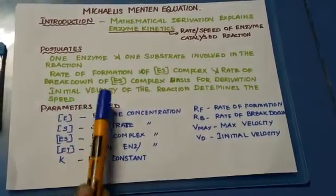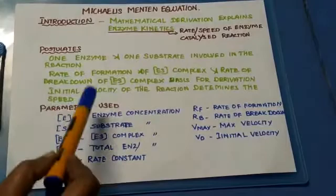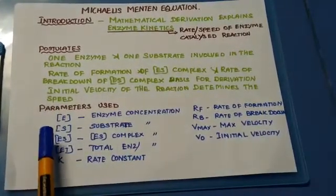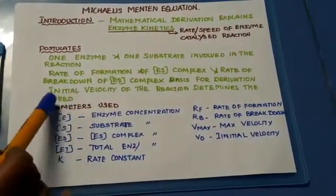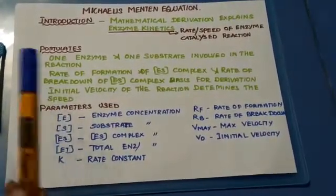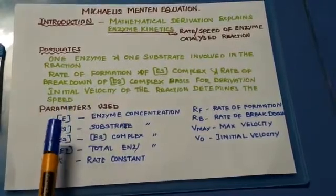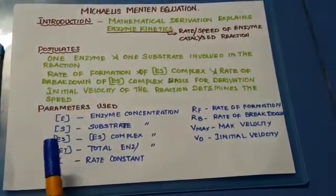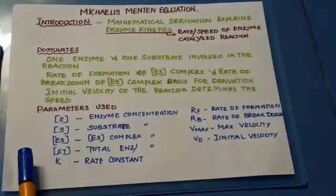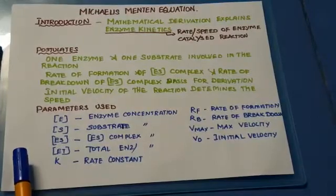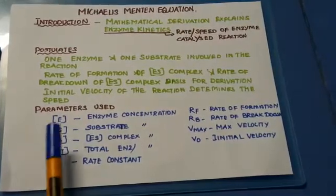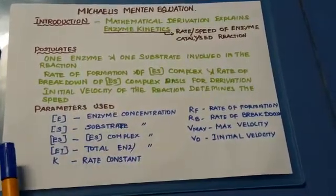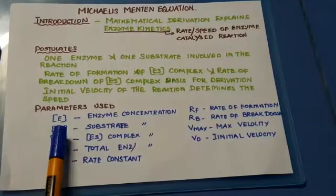All enzymatic reactions are biological reactions, and this lies the basis for determination of the speed of those enzymatic reactions. Now let's see the parameters used in this derivation.